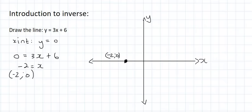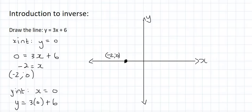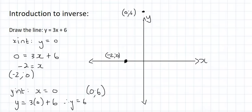To find the y-intercept, we make x equal to 0. So we take our equation and make x 0, giving us 3 times 0 plus 6. If you do the maths, y is equal to 6. So when x is 0, then y is 6 — that point goes up here. Then we connect the dots.